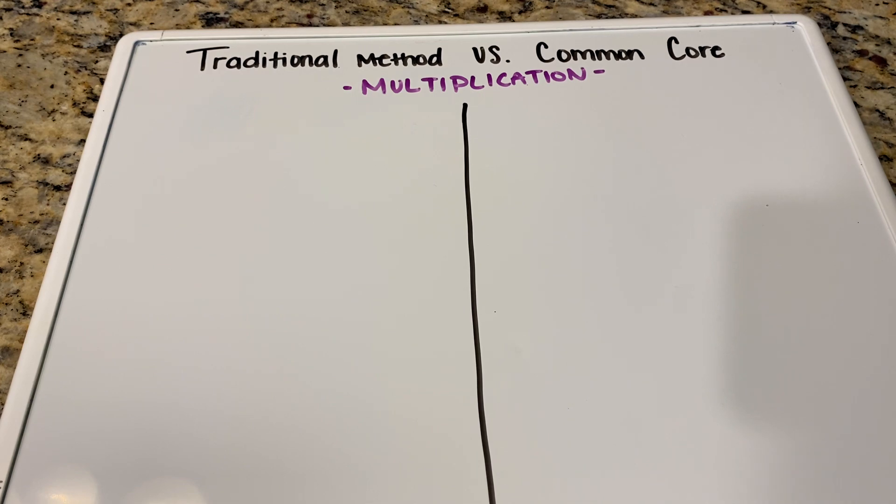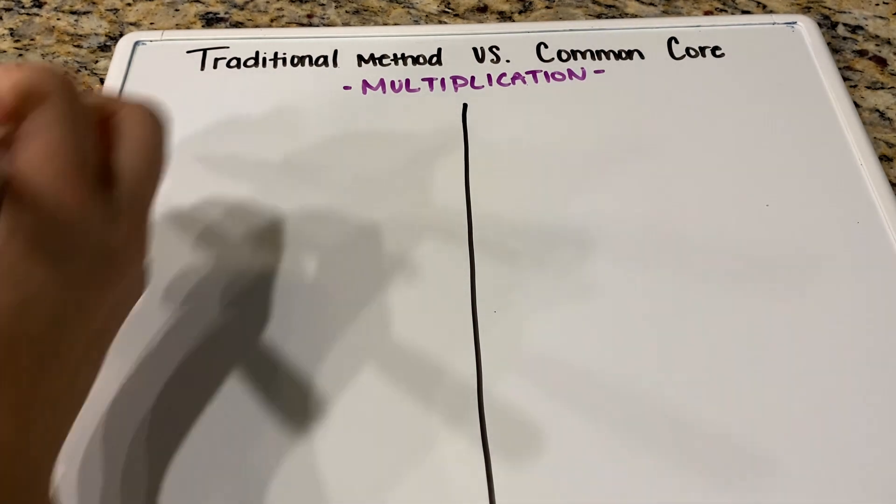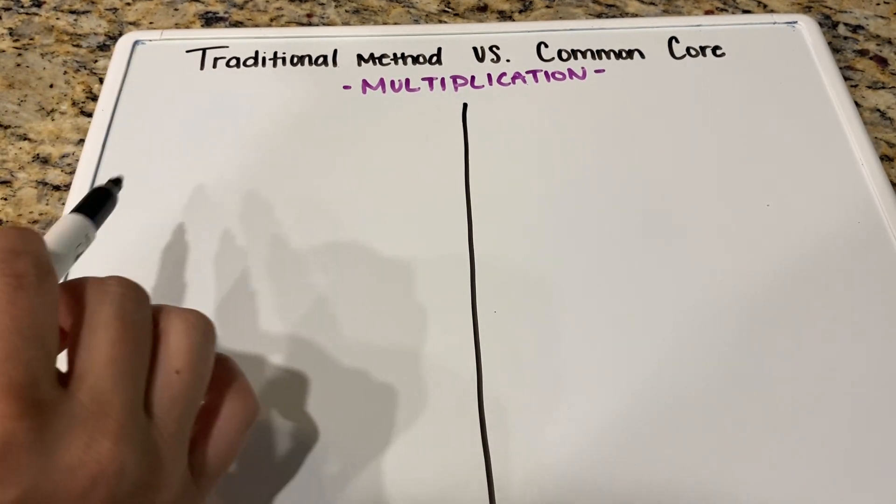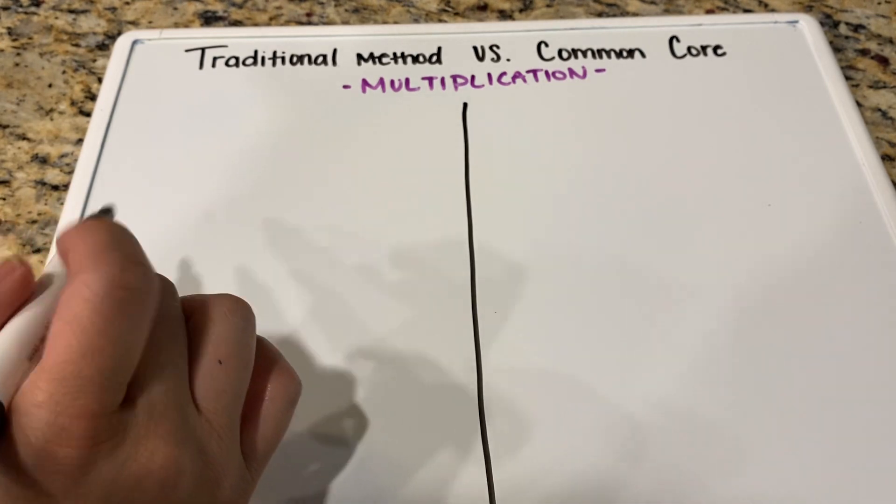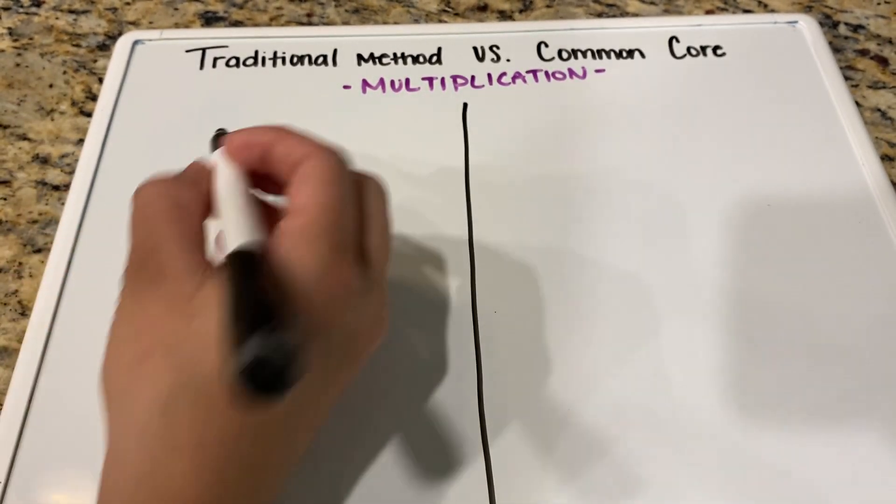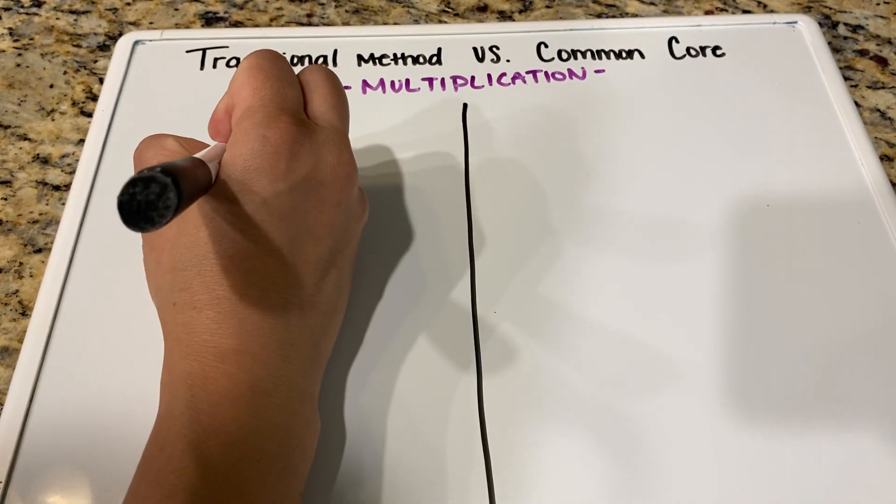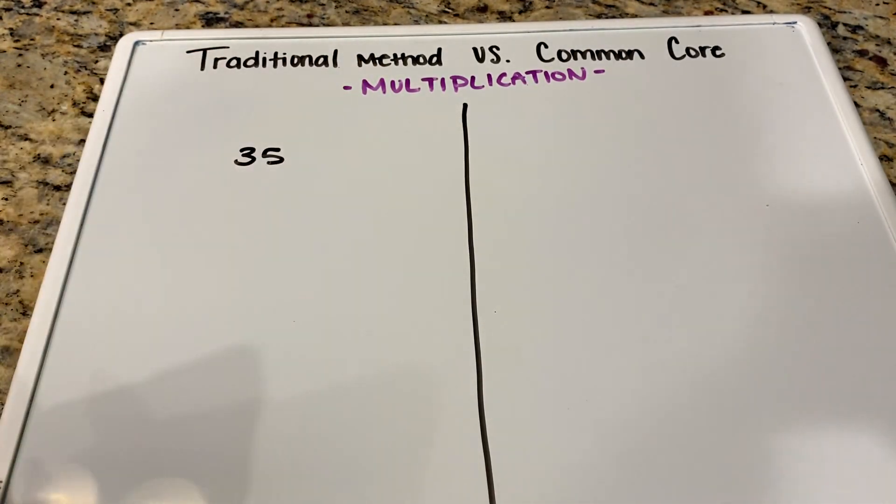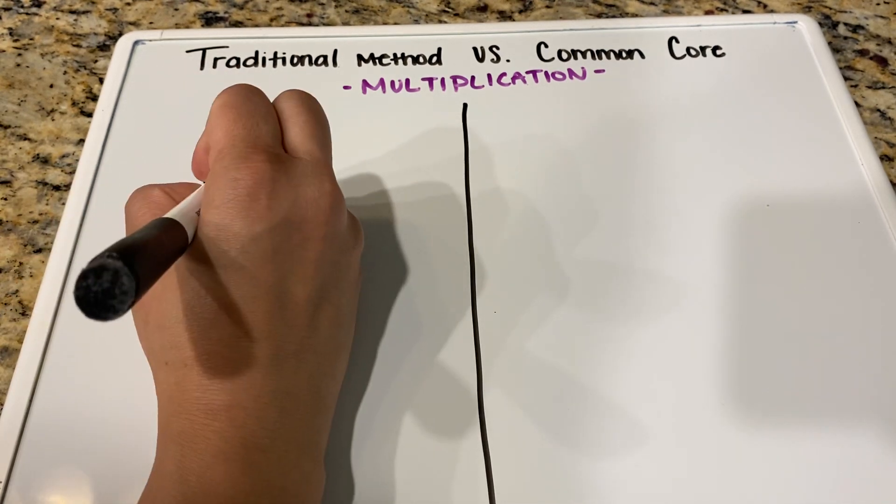Also today, we are going to be doing a problem that is typically within the fourth grade level. So let's go ahead and get started. On the left side, we are going to do the traditional. If you want to just skip over to the common core, I posted down below what time that one starts. So let's get started. Let's go ahead and do 35 times 12.